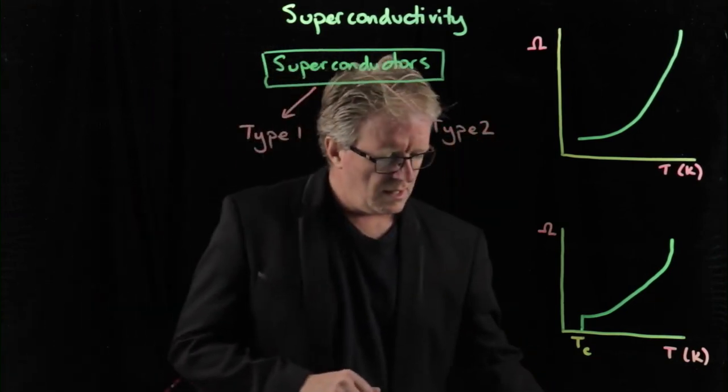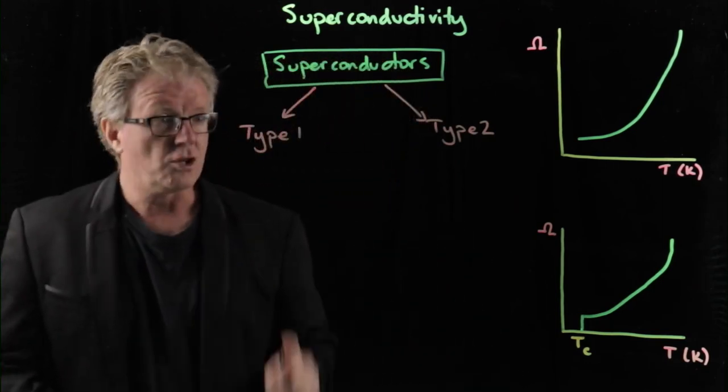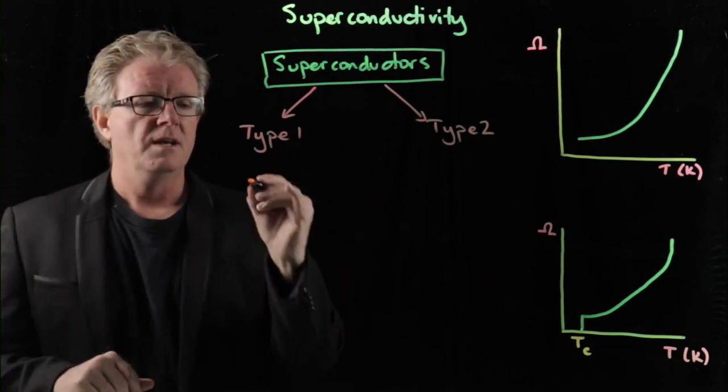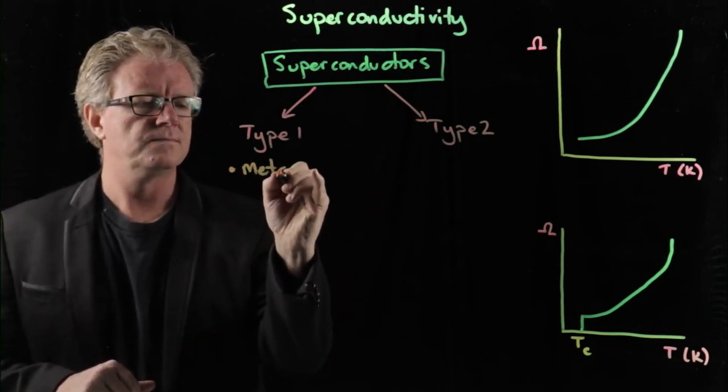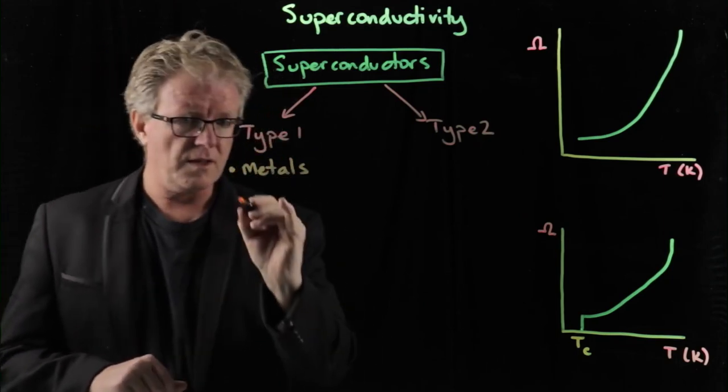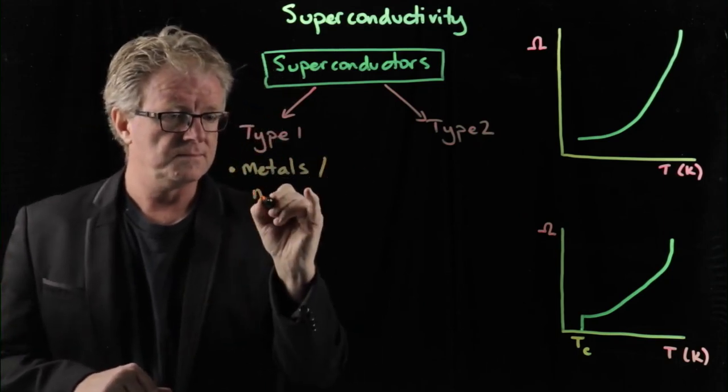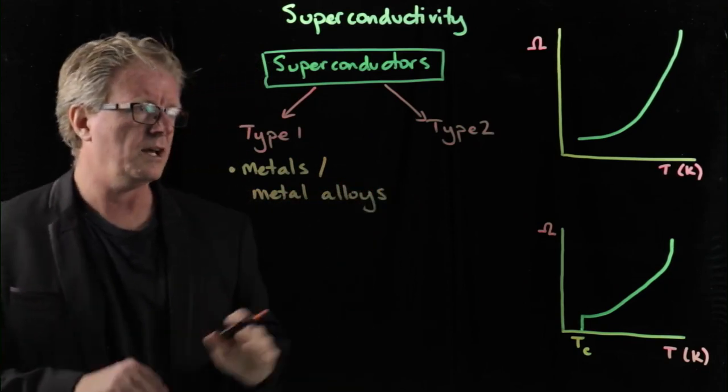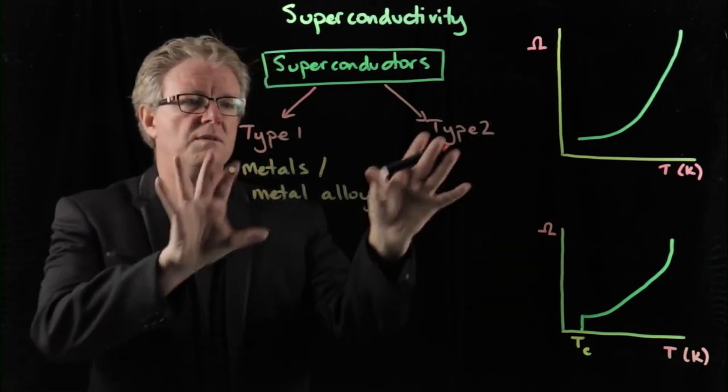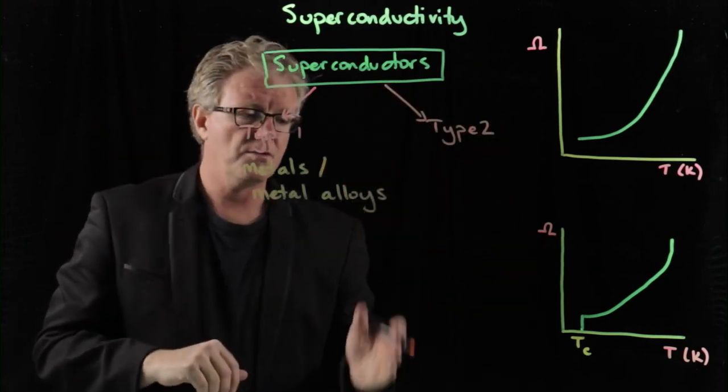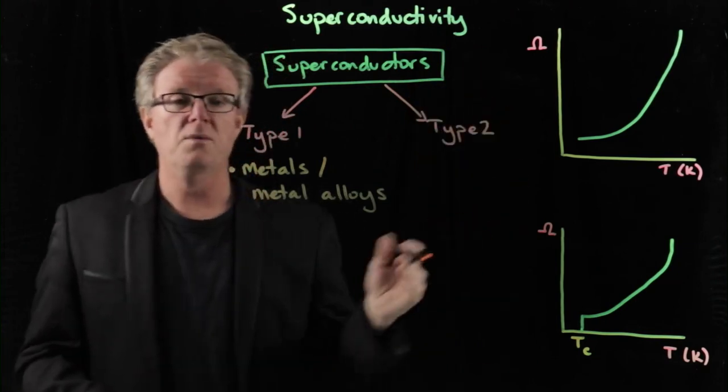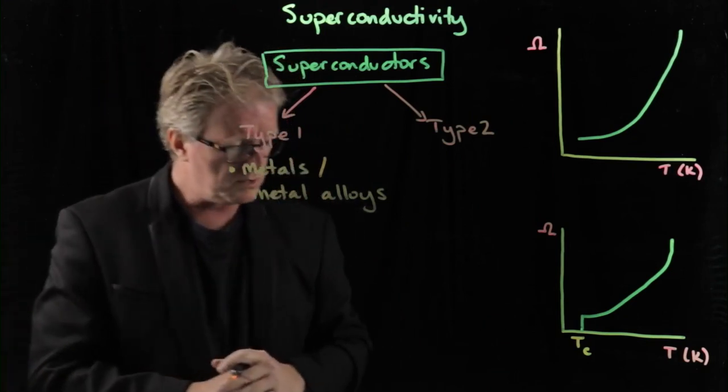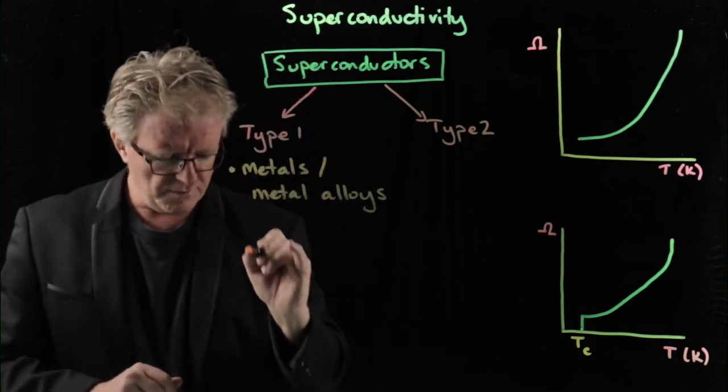Now the thing is, with these, Type 1 was the ones that were first examined first, hence Type 1. And they were metals, and they were also metal alloys. We're going to try and see if we can do the two side by side. So here's Type 1, metals and metal alloys. And if we have a look at some examples, we have aluminum.